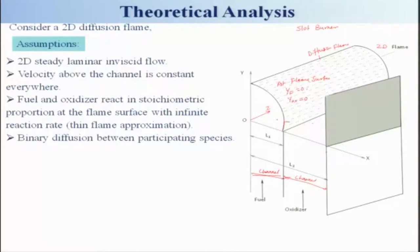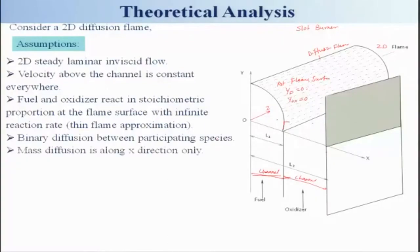We assume binary diffusion between participating species — only fuel and oxidizer are playing an important role. In a real situation this would not hold because chemical reactions produce several species, and in a jet diffusion flame there will be soot and other complexities. However, we will make this simplification.